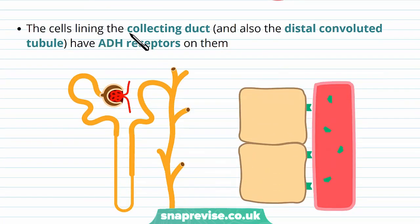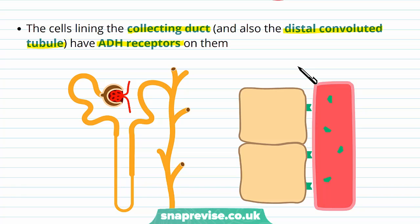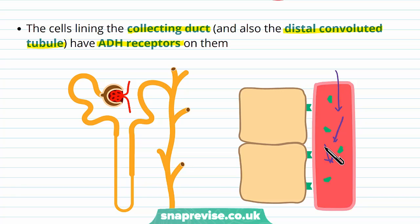Specifically, the cells lining the collecting ducts of the nephron — and also the distal convoluted tubule just before it — have receptors on their cells for the ADH hormone. So as well as traveling through the blood and acting at a distant site, the hormone needs to be able to bind to a receptor that is complementary to it.